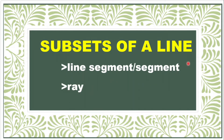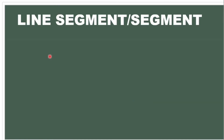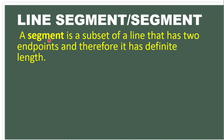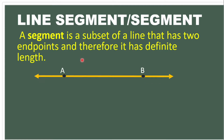Let us define line segment or segment. A segment is a subset of a line that has two endpoints and therefore it has definite length. So it has two endpoints. This is our line, which is line AB. When we divide it at point A and at point B, the part in the middle of them is a line segment.